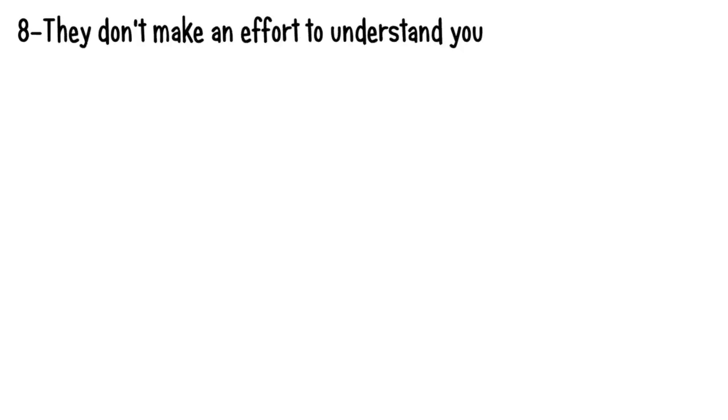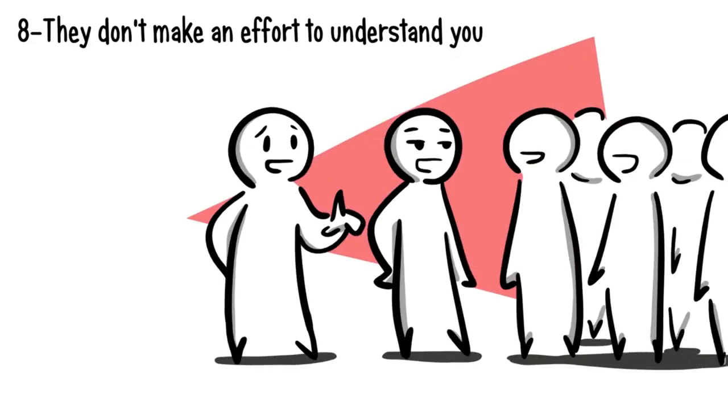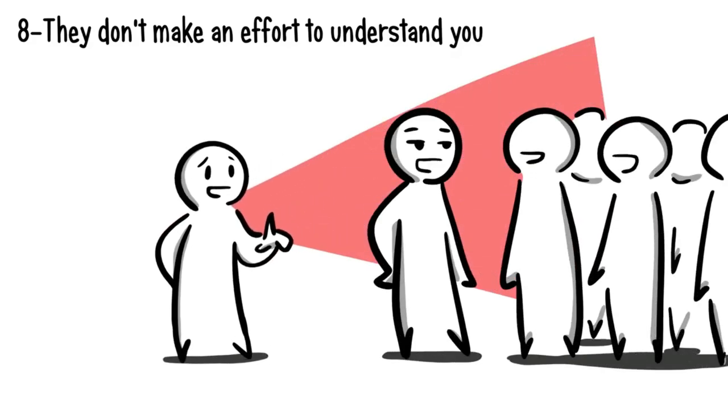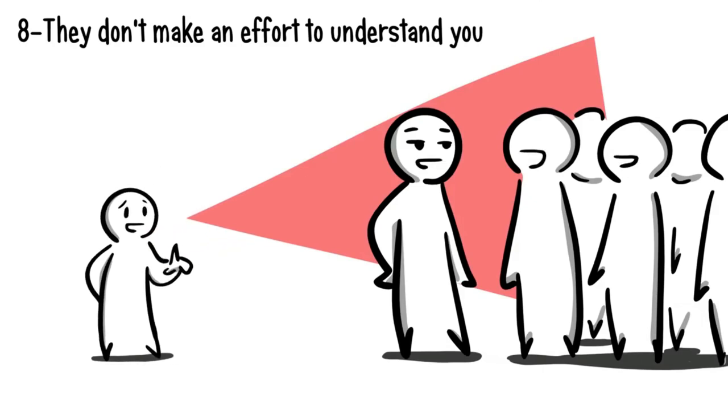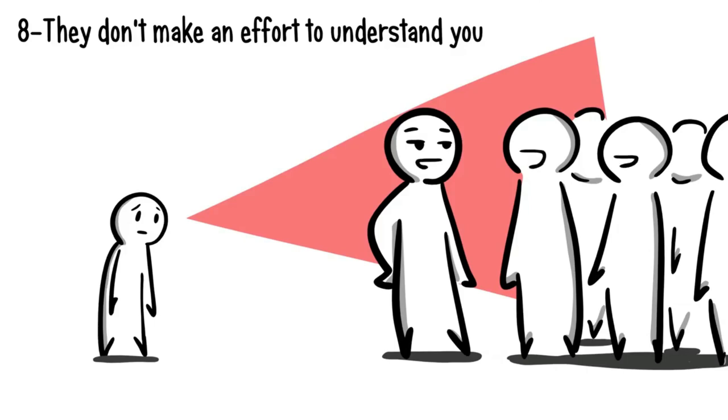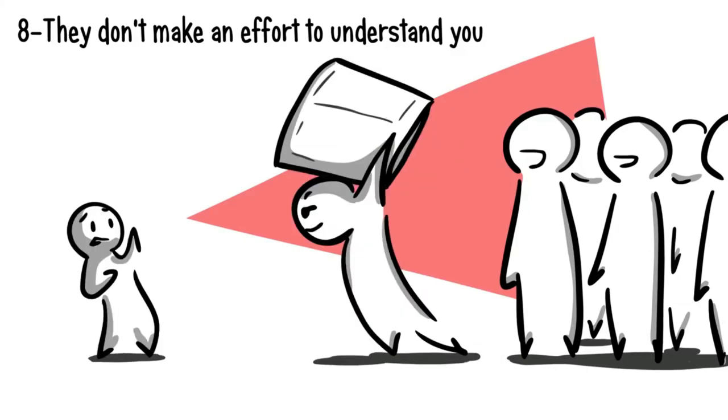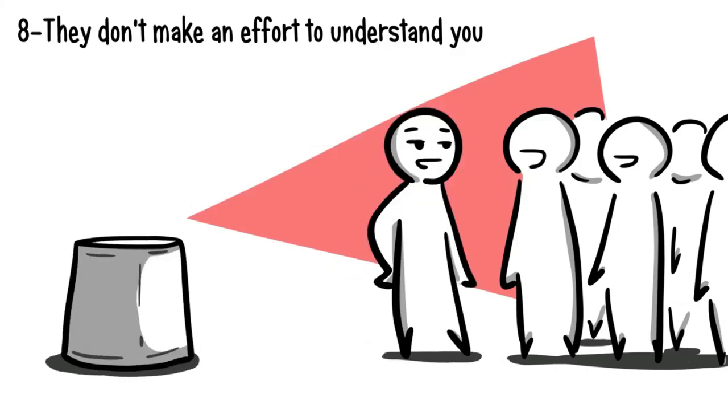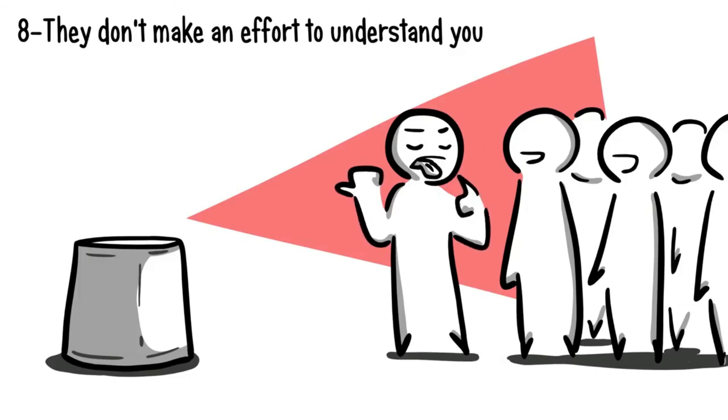Number eight, they don't make an effort to understand you. Feeling misunderstood can be a rather alienating experience. So when someone dislikes you, they won't want to provide support to your ideas and values. Instead, they'll make you feel invisible, unheard, and will dismiss your thoughts, whether it's done subtly or explicitly. One-upping is another strategy they use to control the conversation, instead of allowing you to give your own inputs.